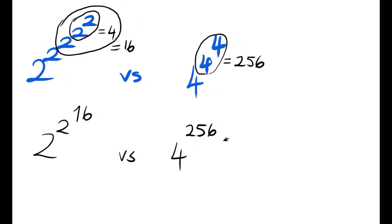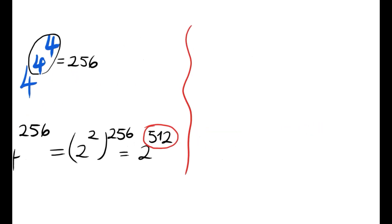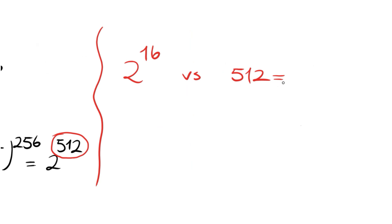This 4 is 2 squared to the power of 256. So this is 2 to the power of 512. So we are to compare 2 to the power of 16 and 512. We have 2 to the power of 16 versus 512. This 512 is equal to 2 to the power of 9. So obviously, 2 to the power of 16 is greater than 2 to the power of 9.